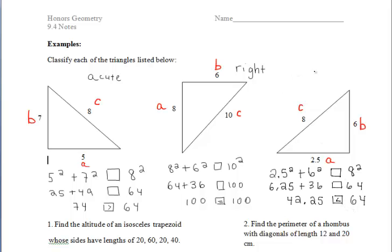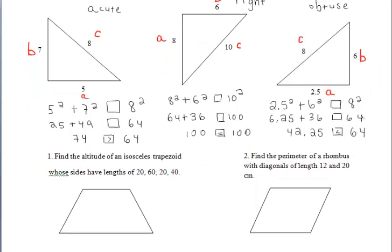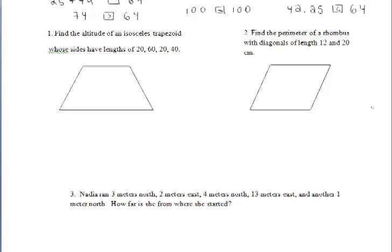And then for the last triangle, we should get this. We should make our 8 C and then we know that 42.25 is less than 64 which means that A squared plus B squared is less than C squared and the triangle is obtuse.